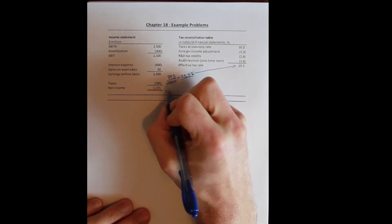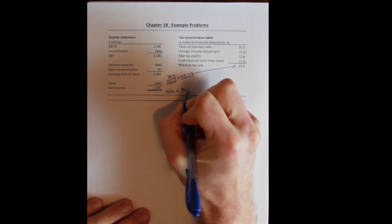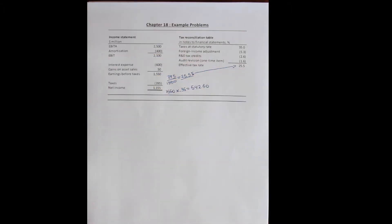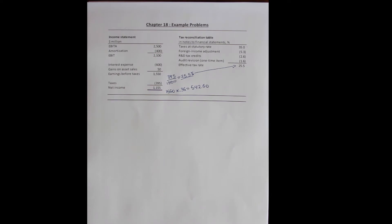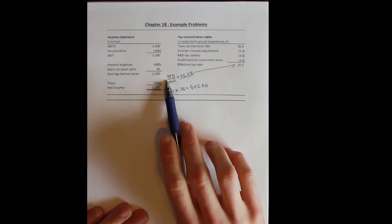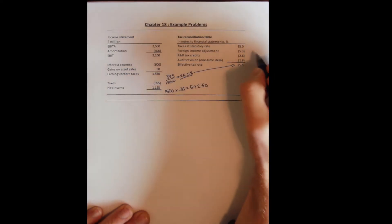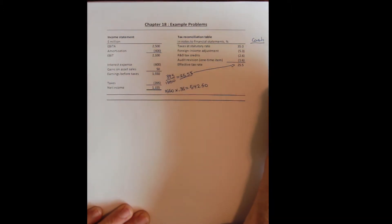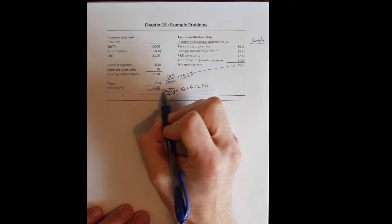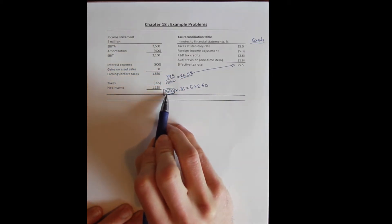They should be paying a 35% tax rate — in other words, 1550 times 0.35, which is 542.5 million. So why are they paying 395 million instead of 542 million? The tax reconciliation table tells us how that happened. We convert the tax reconciliation table to a cash table from a percentage table by multiplying all percentage values by earnings before taxes, just as we did here. Earnings before taxes times the statutory rate gives the cash statutory rate: 542.5 million.